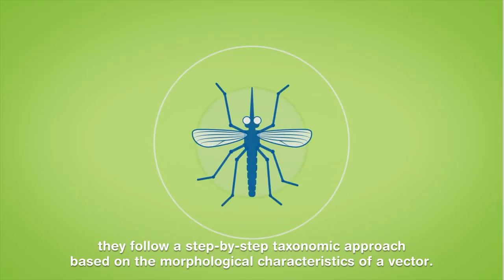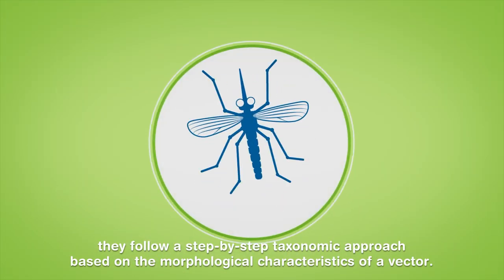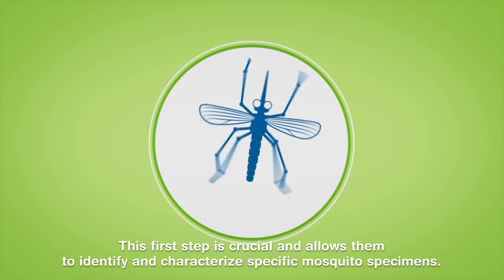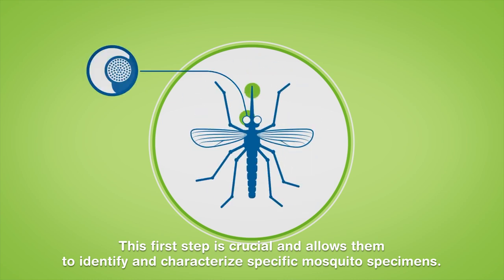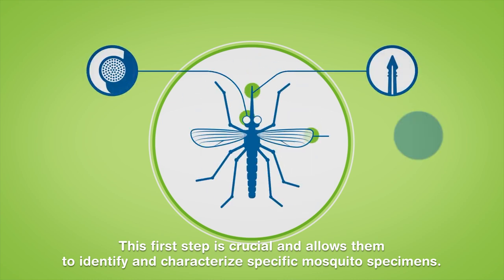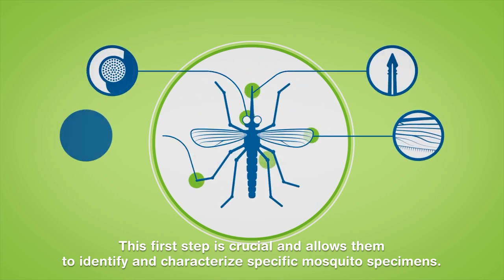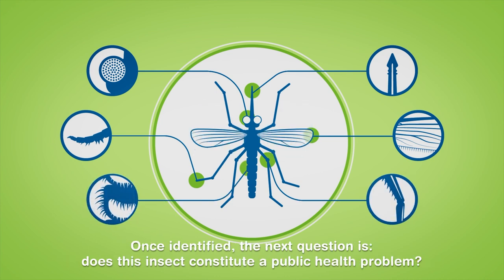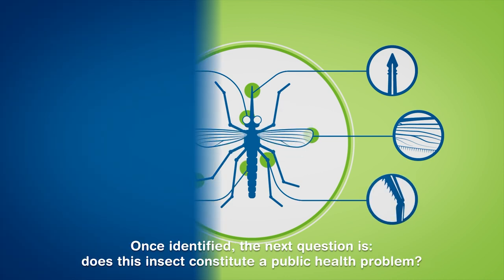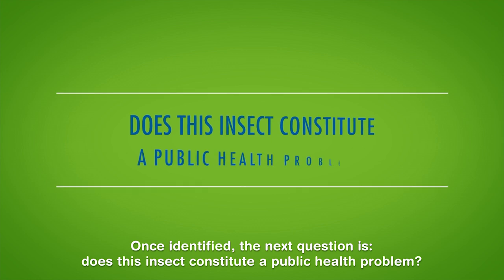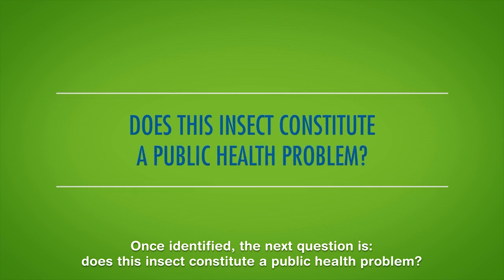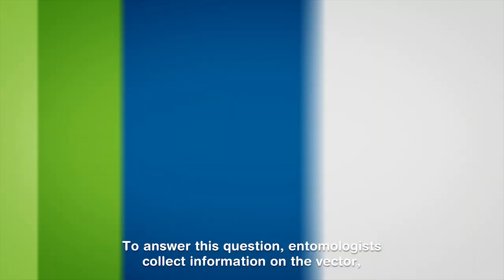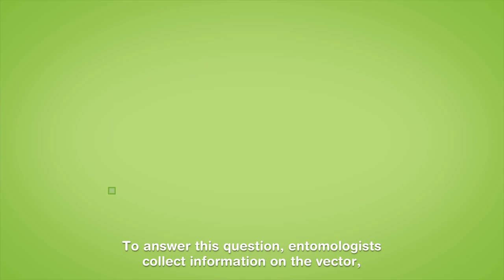This first step is crucial and allows them to identify and characterize specific mosquito specimens. Once identified, the next question is: does this insect constitute a public health problem? To answer this question, entomologists collect information on the vector.